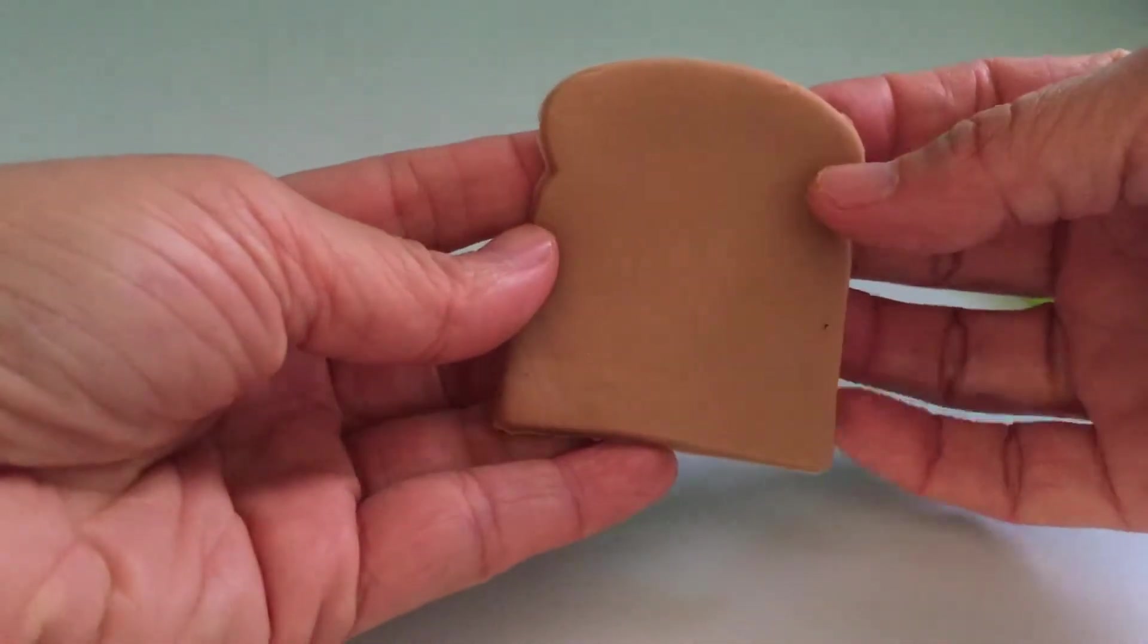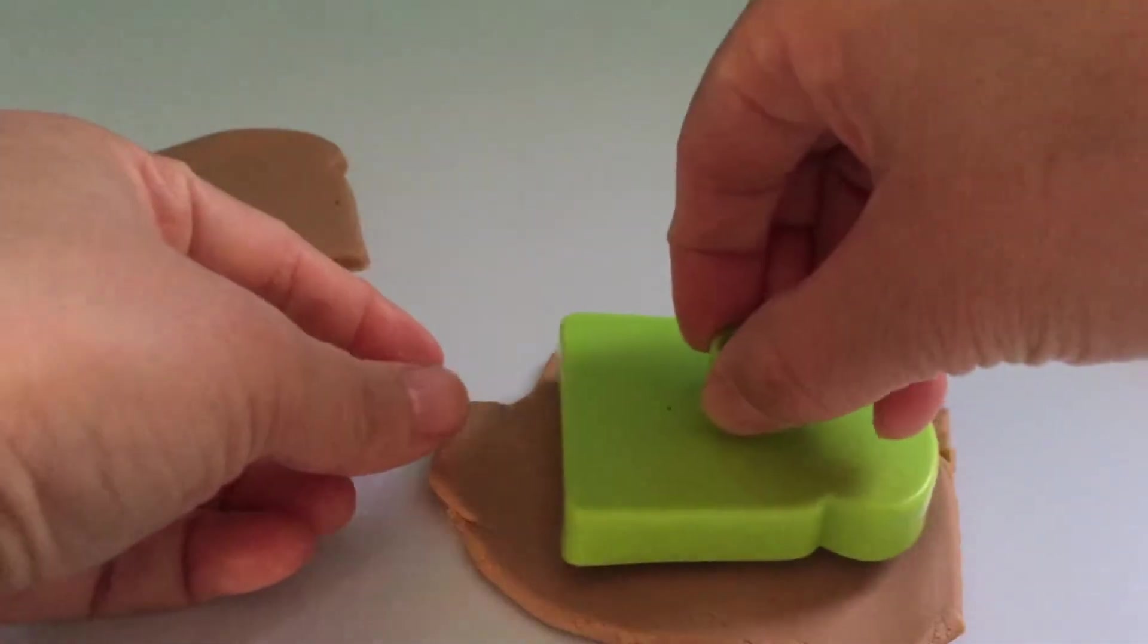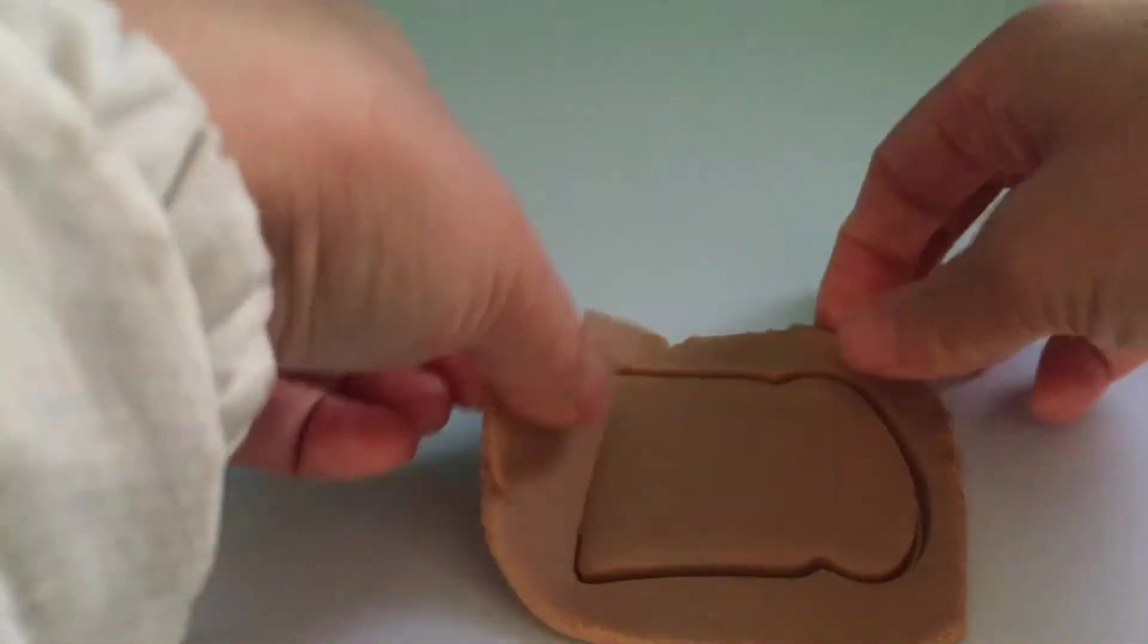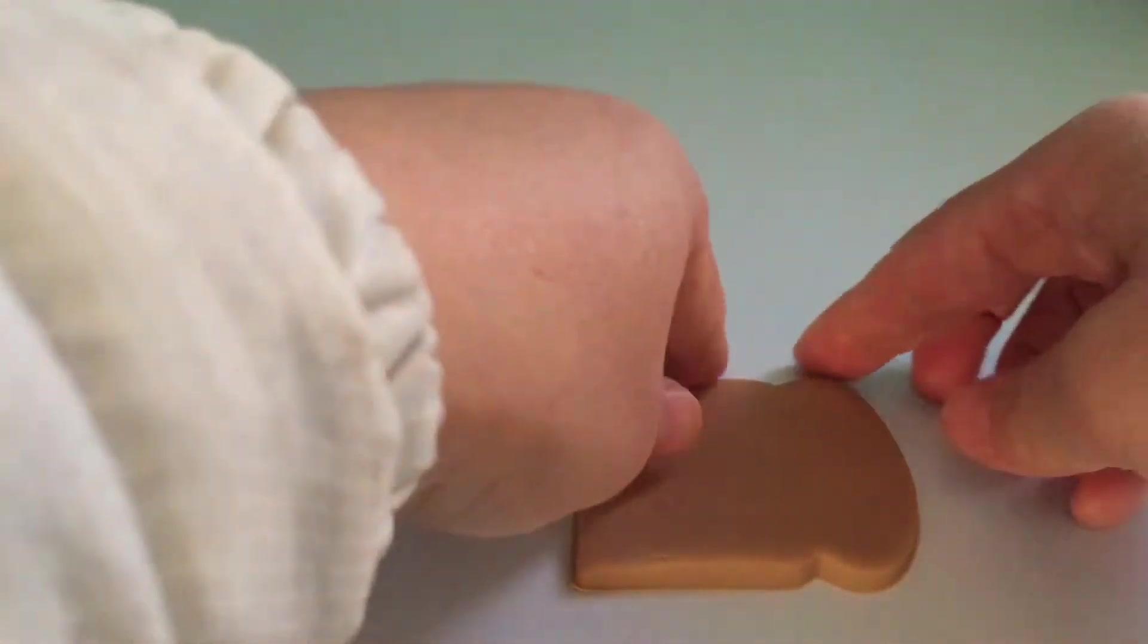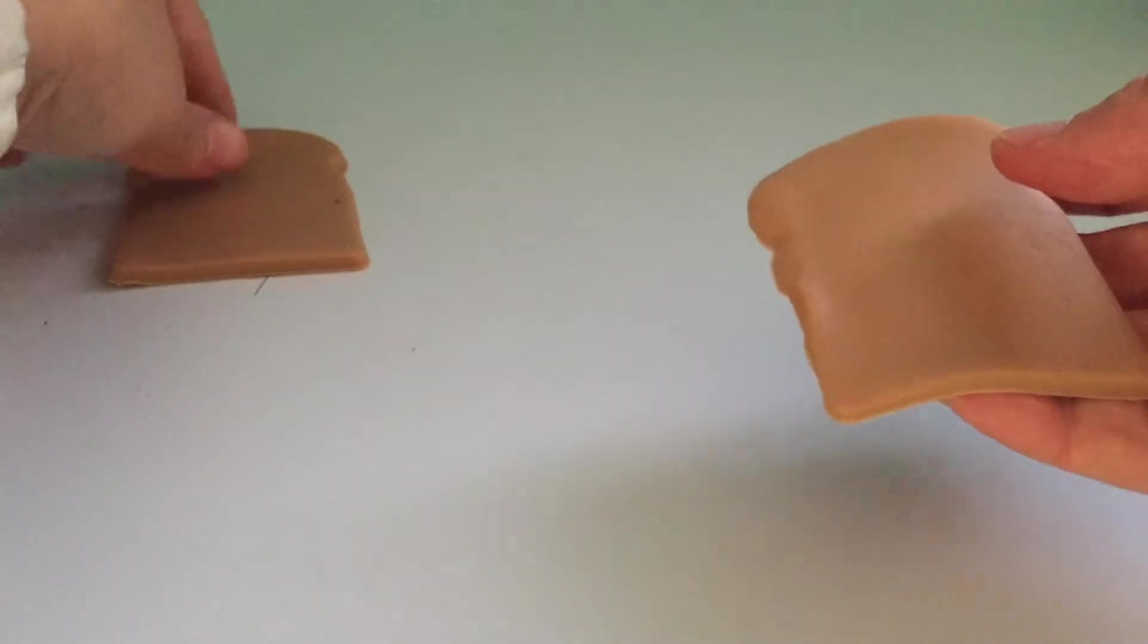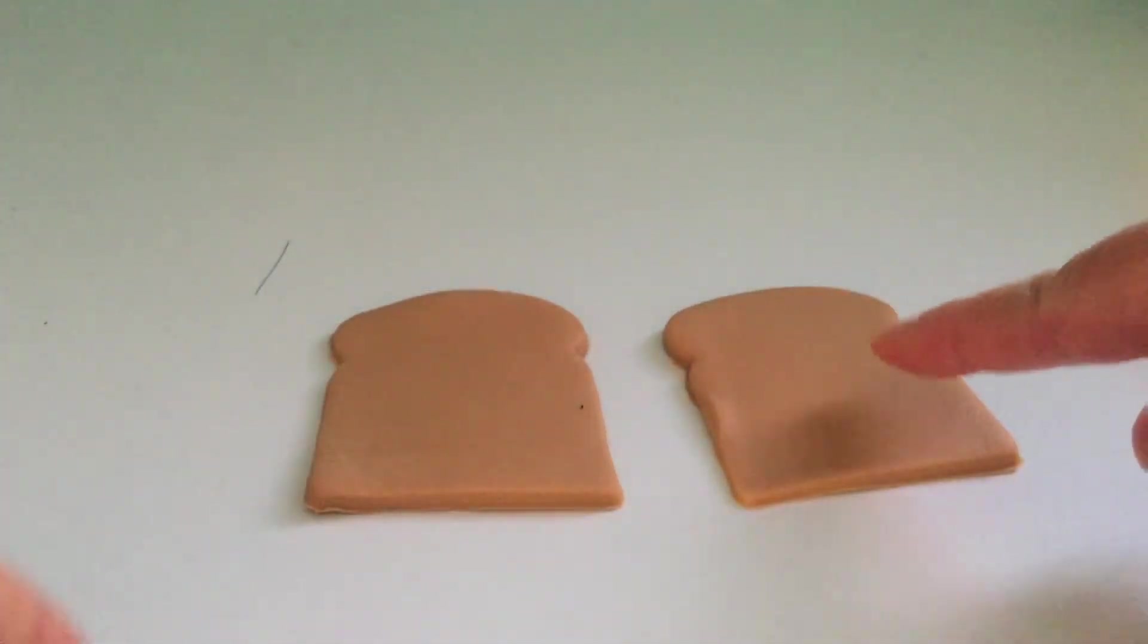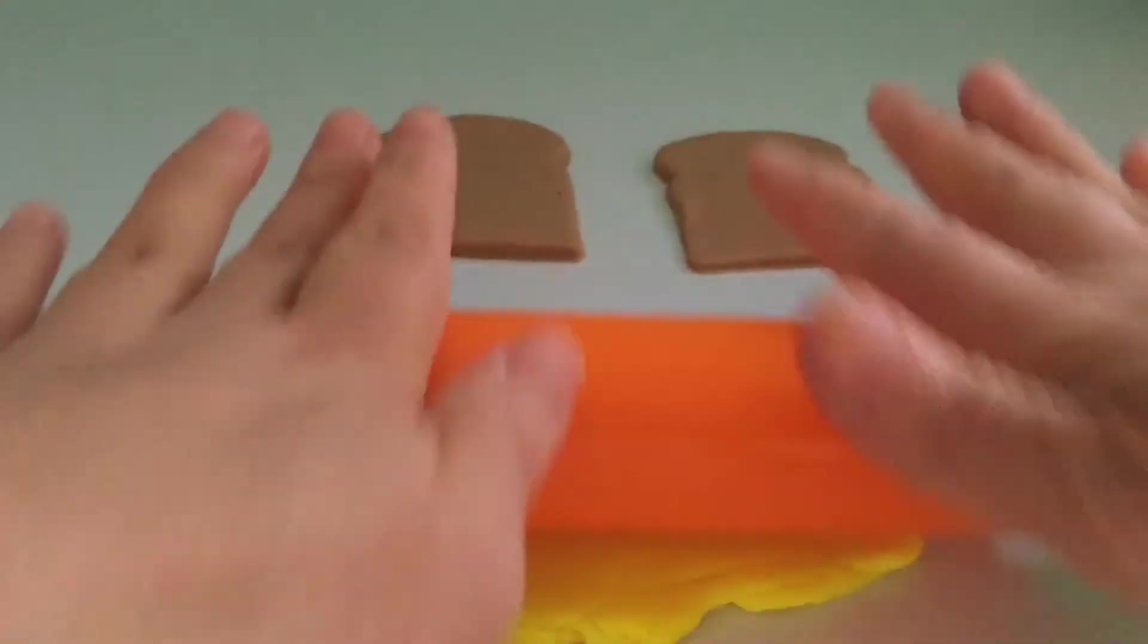I've got one piece of wholemeal bread. Two pieces of wholemeal bread. One, two, for our sandwich.